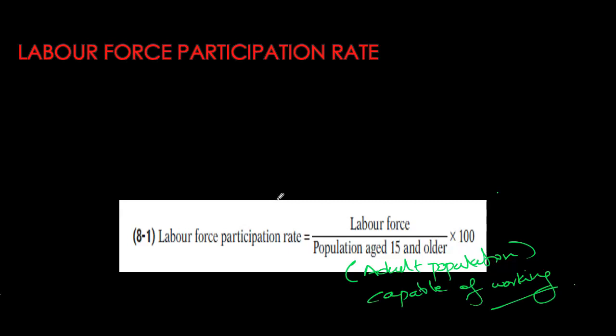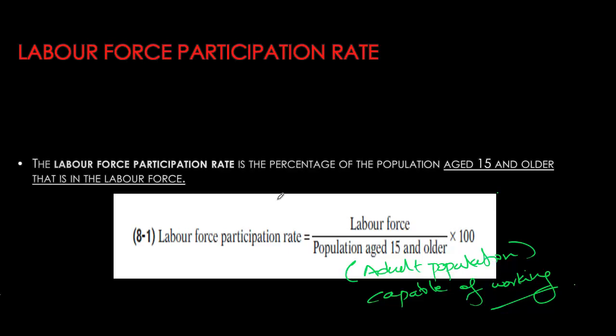We also often calculate the women's participation rate and the men's participation rate. The women's participation rate is calculated by dividing the number of women in the labor force by the number of women in the working age population. Similarly, the male participation rate is the number of males in the labor force divided by the number of males in the working age population. Remember, working age population is the population aged 15 and older.